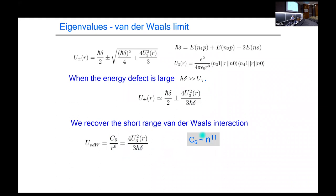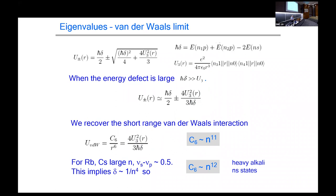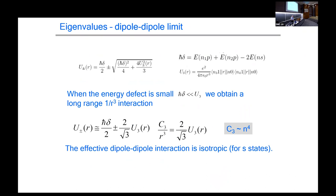There are two limits. If the energy defect is large — either the defect is large or the interaction U is small because of large separation — expanding the square root gives an interaction energy that scales as U squared divided by the defect. Since there's a one over R cubed in U, squaring gives a one over R to the sixth van der Waals interaction, written as a C6 coefficient divided by R to the sixth, scaling as N to the 11th. For rubidium and cesium specifically, the difference in energy defects of S and P states is a half, so you actually get an N to the 12th scaling.